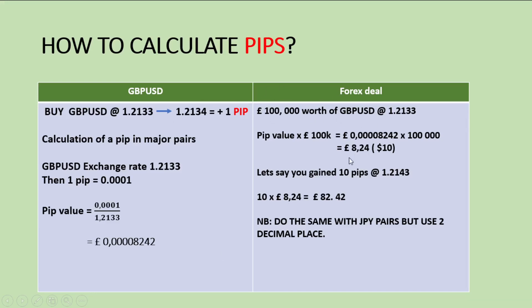The most important part is to calculate your PIP value first. Once you have the PIP value, you can multiply it by the amount in your account. I know you are not going to have 100,000 pounds, but the power of leverage — which we will cover in the next video — means that even with 100 pounds you can control that level. I hope this made sense. If it did not, please repeat it and go through it step by step — calculate it yourself until it does. Then let's move on to the leverage video. Thank you.